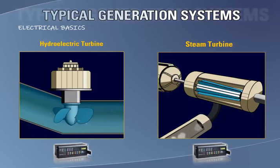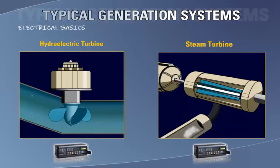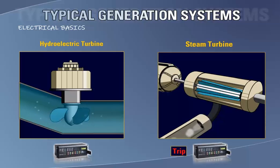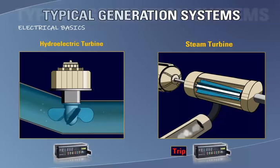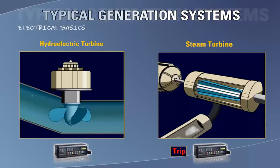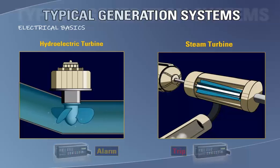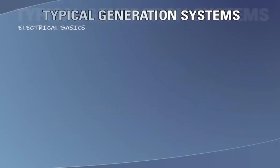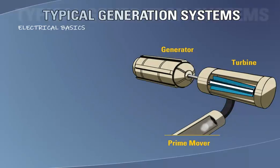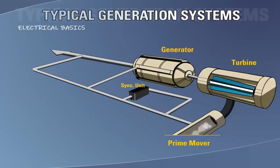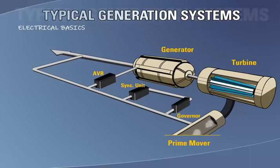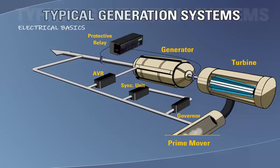The operation of protective elements will generate a trip when protecting one style of generator, while on another, the element may either not be enabled or, if enabled, may only generate an alarm. In addition to the mechanical arrangement, a typical generator system consists of a synchronization unit, an automatic voltage regulator, speed regulator, and a protective relay.